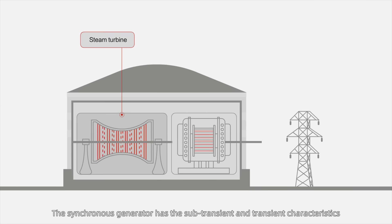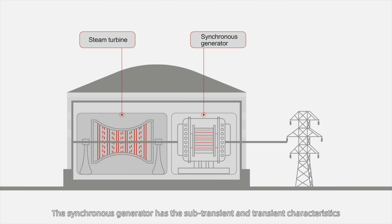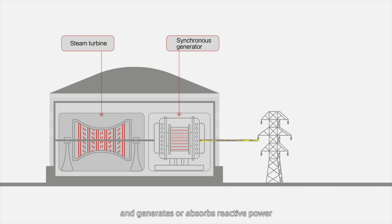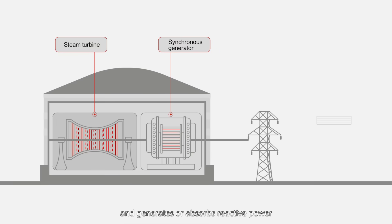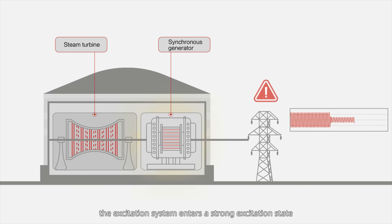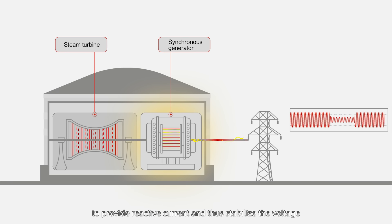The synchronous generator has sub-transient and transient characteristics. It keeps the internal potential unchanged when the power grid voltage changes and generates or absorbs reactive power. During a big voltage drop due to a major fault, the excitation system enters a strong excitation state to provide reactive current and thus stabilize the voltage.